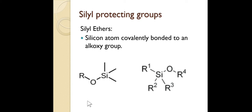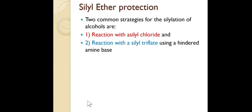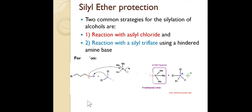Let's discuss the formation of silyl ethers. There are two main strategies for the silylation of alcohols. Firstly, the reaction with silyl chloride, or you can use silyl triflate, in the presence of a hindered base such as an amine or organic base.